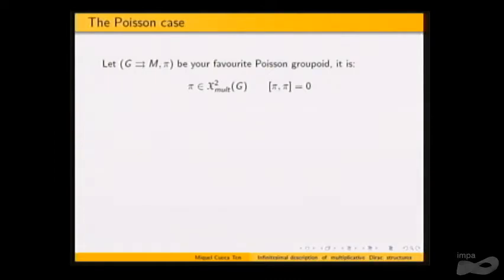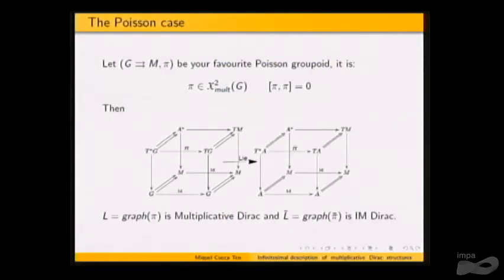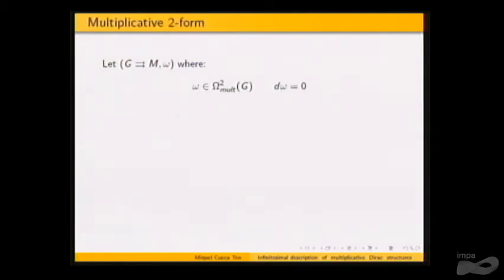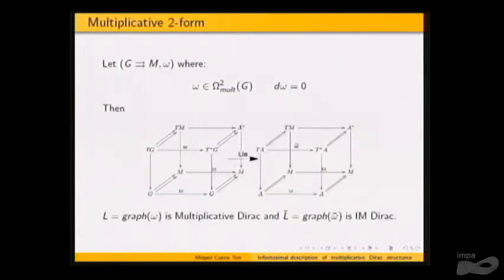When we have a Poisson groupoid — a Poisson manifold that is a groupoid with a multiplicative bivector satisfying the Poisson equation — we can define a multiplicative Dirac structure given by its graph. If we have a two-form that is also multiplicative and closed, its graph is also a multiplicative Dirac structure. If we add the non-degeneracy condition, we have a symplectic groupoid. Without it, the graph of a multiplicative two-form is still a multiplicative Dirac structure.